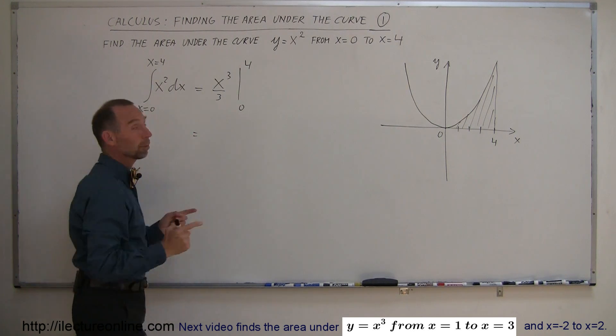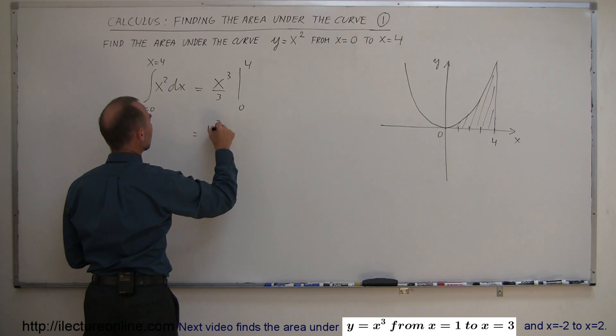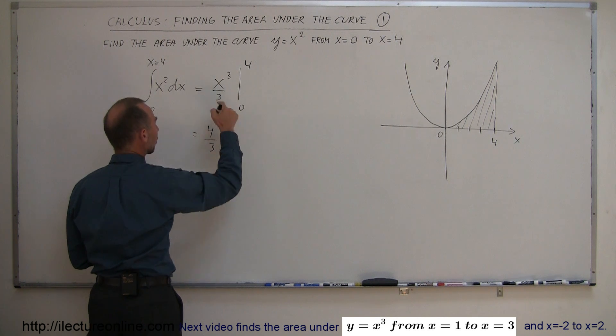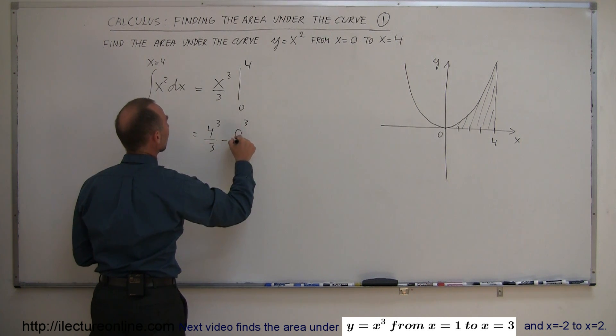So what we do then is we plug in the upper limit, so we get 4³/3 minus when we plug in the lower limit, which is 0³/3.